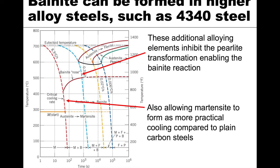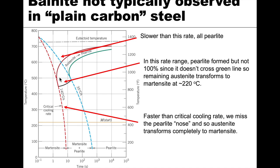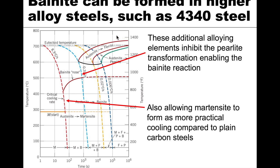Bainite can be seen in higher-alloy steels like 4340, which contains many alloying elements. These alloying elements slow the pearlite transformation significantly — in 4340 the pearlite reaction takes about 10⁴ seconds, compared to roughly 1–10 seconds in plain carbon steel. This slowing of the equilibrium reactions allows bainite to form, and the bainite-pearlite nose appears on the diagram, while martensite can still form at lower temperatures.